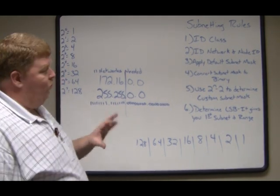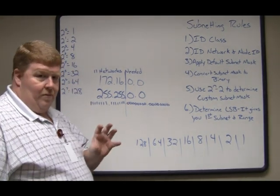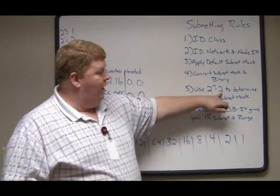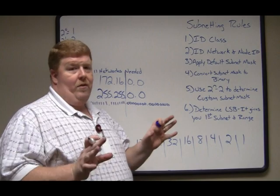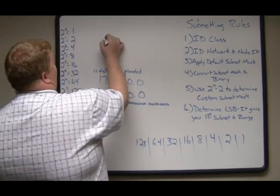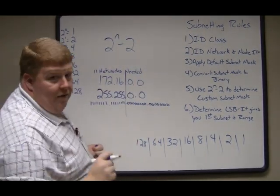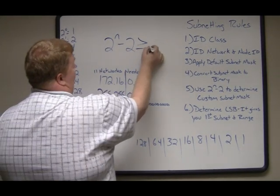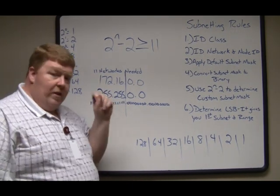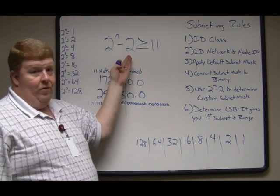Because just look at what we have — we need to create 11 subnets or 11 networks. There is one formula you're going to use in networking, and this is it: two to the nth minus two. So in this case, two to the nth minus two must give us a number that is greater than or equal to 11.